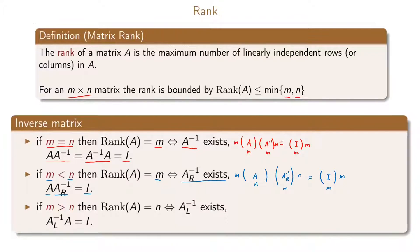We can also have a rectangular matrix where the number of rows is larger than the number of columns. In that case, if the rank of the matrix is n (the number of columns), then there exists a left inverse. When we multiply the left inverse by the matrix A, we get the square identity matrix I.